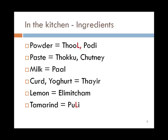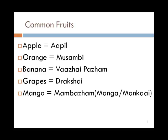Curd is tayar, also yogurt. Lemon is yelimicham and tamarind is puli. So lemon rice would be yelimichasadam, and tamarind rice would be pulisadam. Some common fruits — it's really okay to say them in English, but here are the actual Tamil words: apple is apple, orange is musambi, banana is varai param, grapes is drakshay.